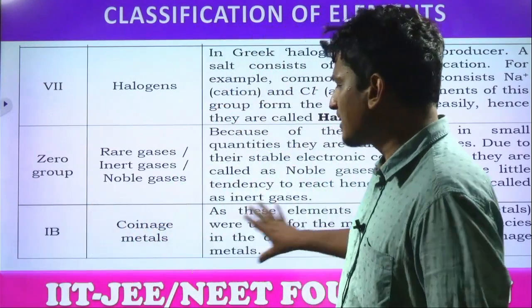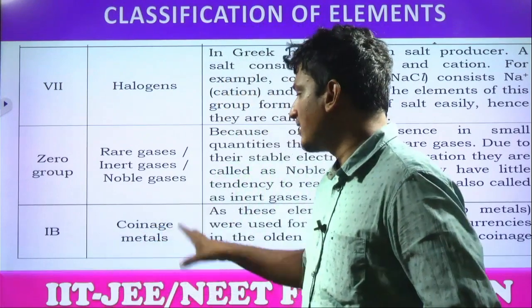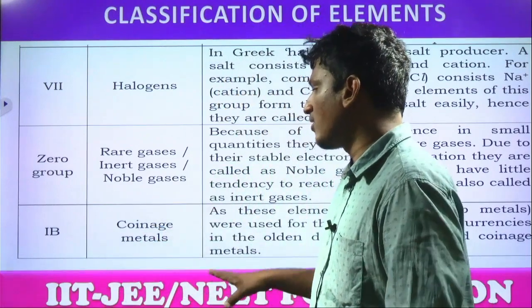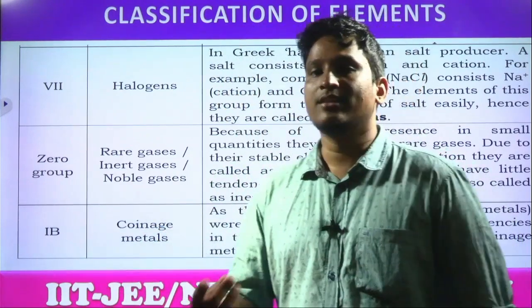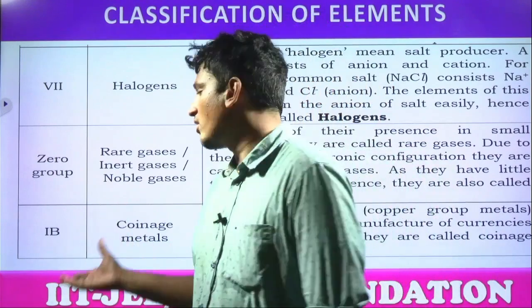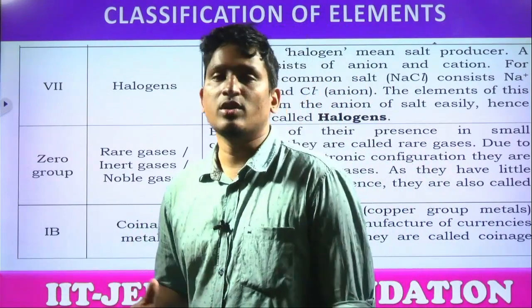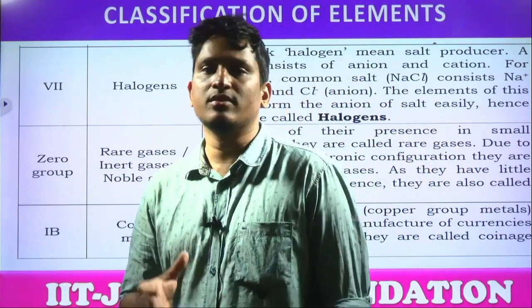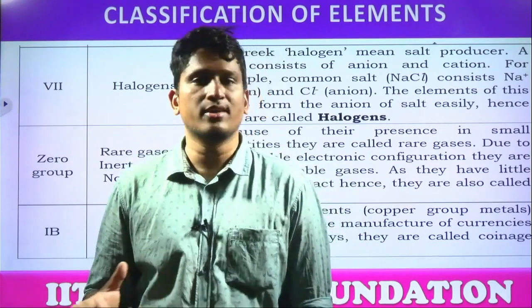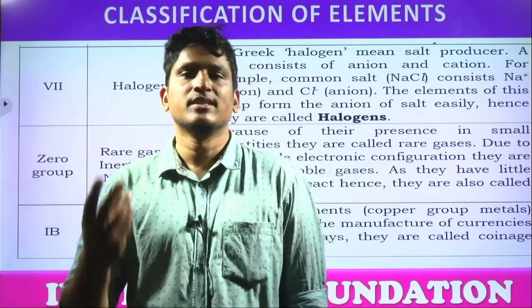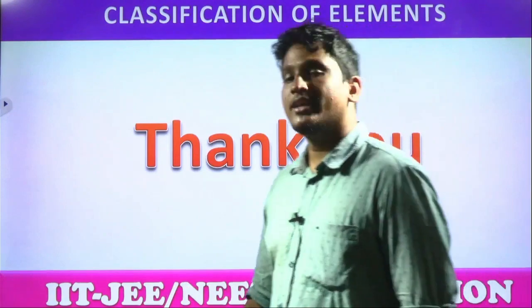Next, these elements come under d-block and are called coinage metals — mainly copper, silver, and gold. They are not a separate group but within d-block. Why coinage metals? Because from ancient times, coins have been made with these metals — gold, silver, and copper.